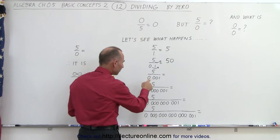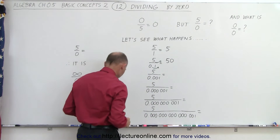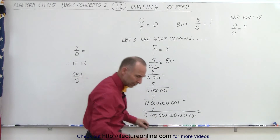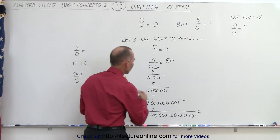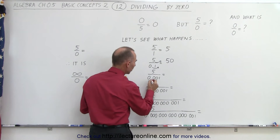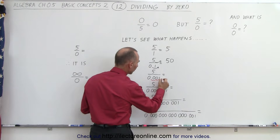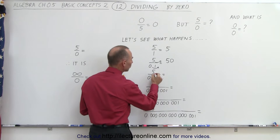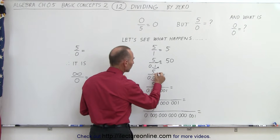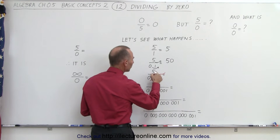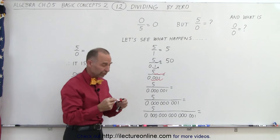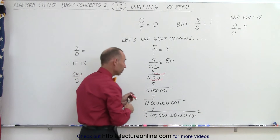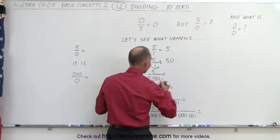What if we divide five by 0.001? To make the denominator into a one, we need to move the decimal place over three times, which means we now made space for three zeros. The result, therefore, would be five thousand.